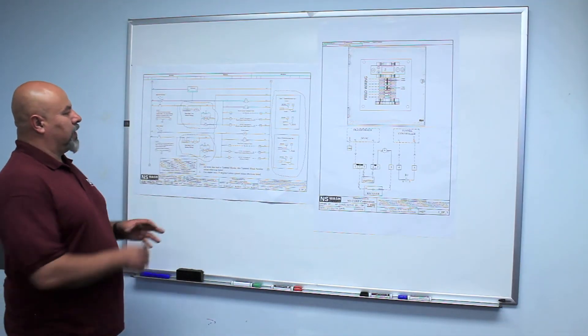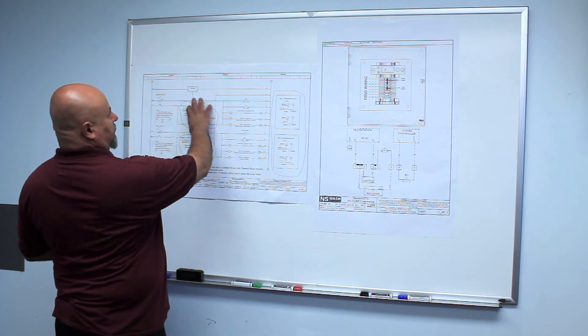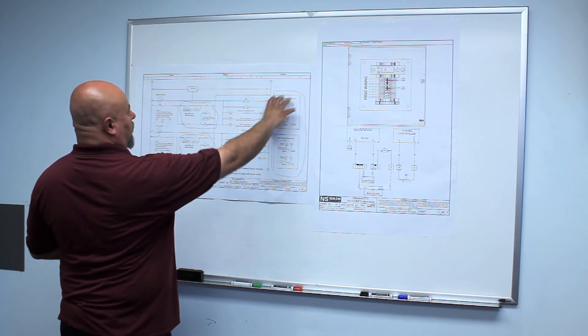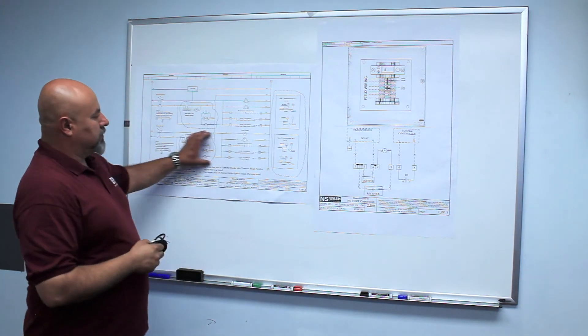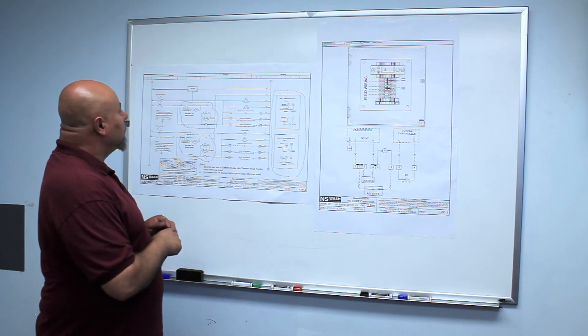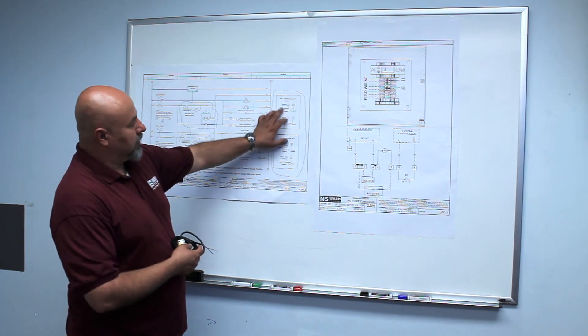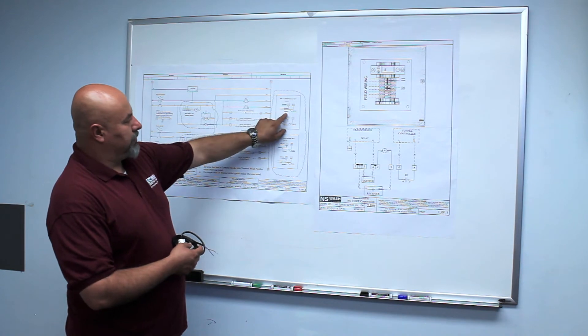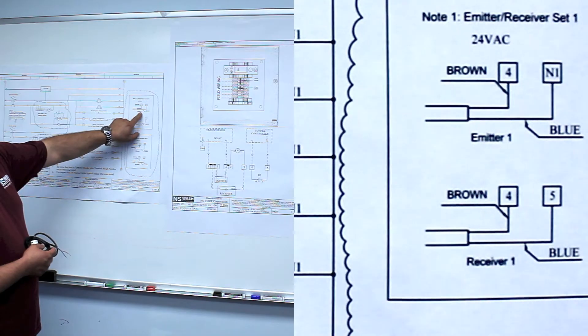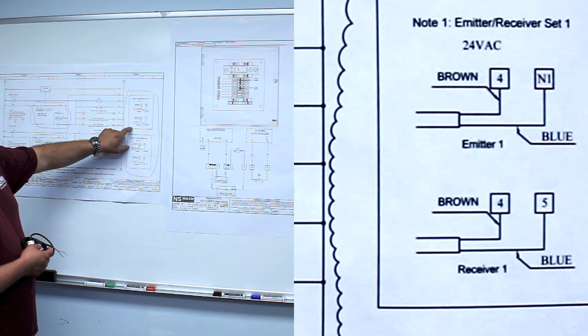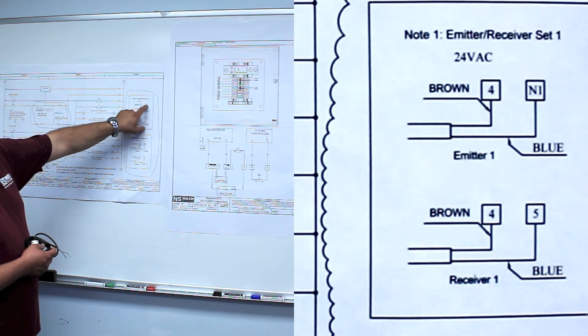We're using two sets of photo eyes here. This set here is one set of photo eyes for activation, and here's another set of photo eyes for activation. And again, you want to identify, it's clearly marked here, the emitter photo eye, brown wire goes to terminal four, the blue wire goes to neutral.